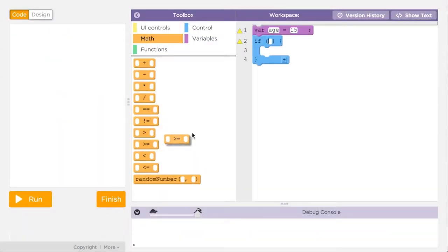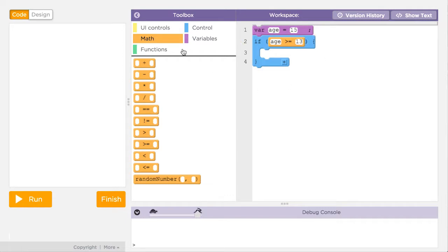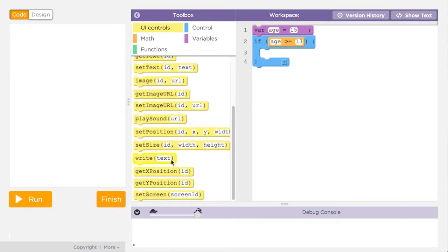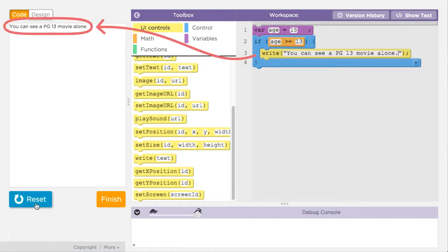The question, or Boolean expression, goes next to the if. The block of code we want to run only if the condition is true goes inside the if statement. So in our example, whenever the expression age greater than or equal to 13 is true, the program will write to the screen that you are old enough to see a PG-13 movie.